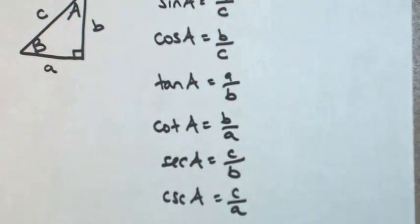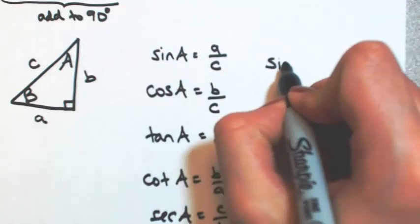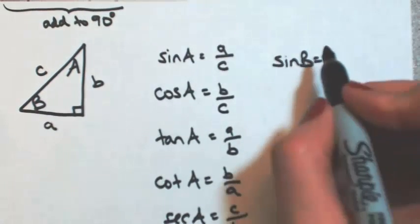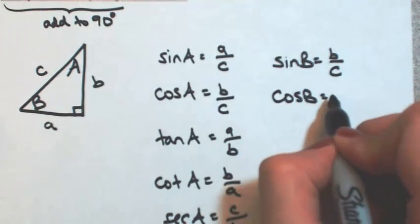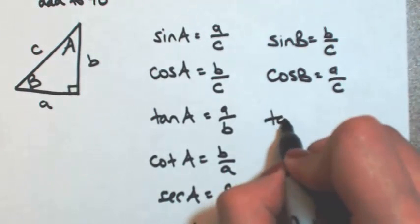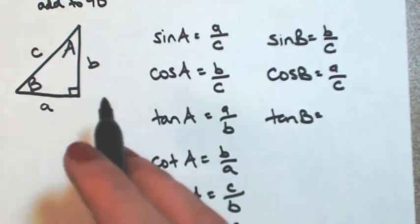Let's do the exact same thing for angle B, and we'll see how these relate to each other. So the sine of angle B, opposite over hypotenuse, so B over C. Cosine of angle B, A over C. Tangent of angle B, opposite over adjacent, so B over A.